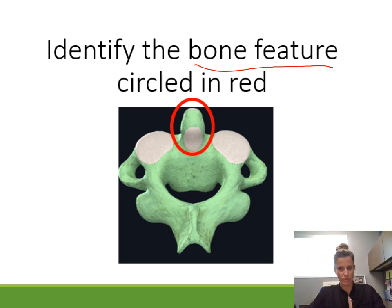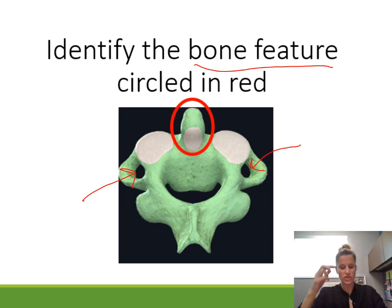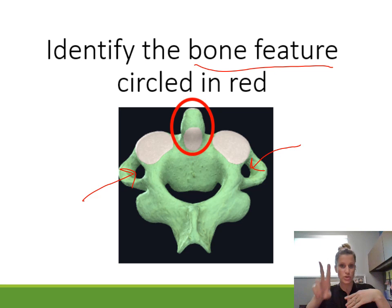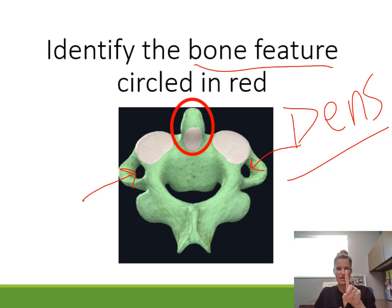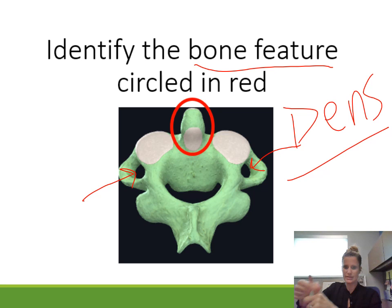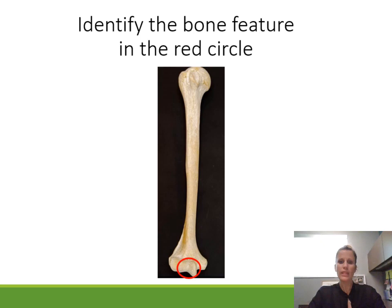Identify the bone feature circled in red. This is one of the cervical vertebrae — I know because it has these little holes on the side called transverse foramina. This is a very special vertebra, C2, the second cervical vertebra. The specific feature sticking up is called the dens. C2 itself is called the axis. The dens sticks up through C1, the first cervical vertebra, and that's what allows you to turn your head — C1 rotates on the dens.